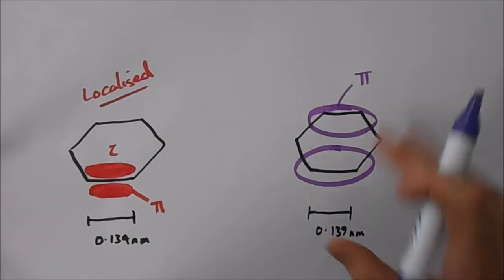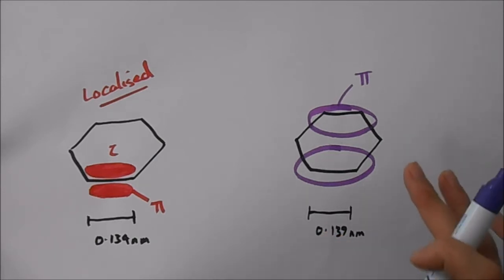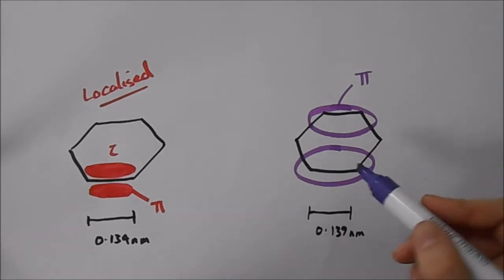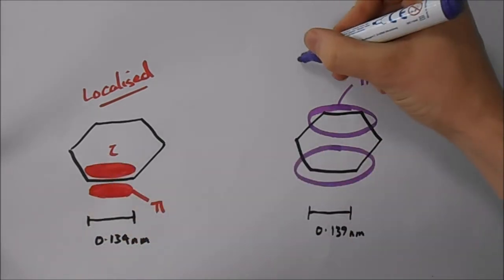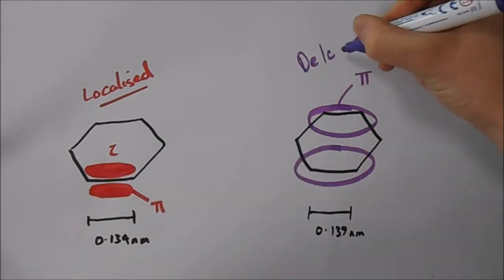And that means the electron density here is much, much lower than it is over here, because this is delocalized.